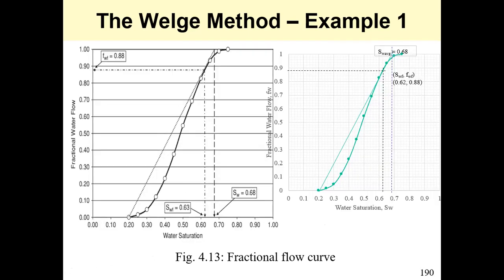The plot on the left is from Nze Kwe Petroleum Engineering Practice, and this is the same fractional flow curve produced using Excel. After completing the fractional flow curve, draw a tangent from the initial water saturation to touch the curve and extend it to fw equal to 1. Reading off the tangent gives the fractional flow of water and the Sw — I got 0.62, though the book has 0.63. The 0.68 is the average water saturation obtained when extending to fw equals 1.